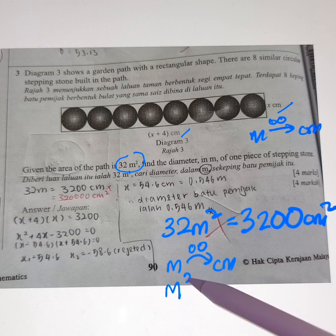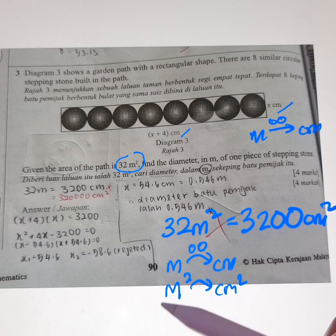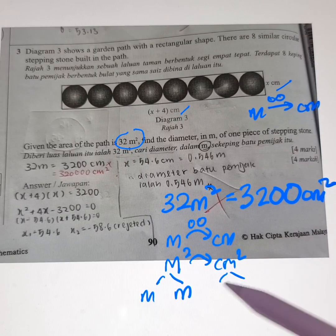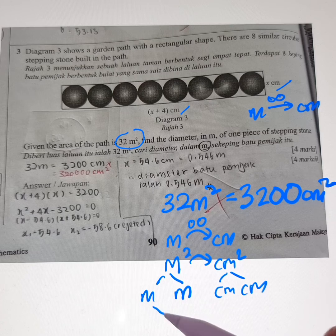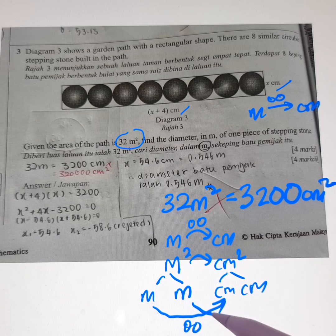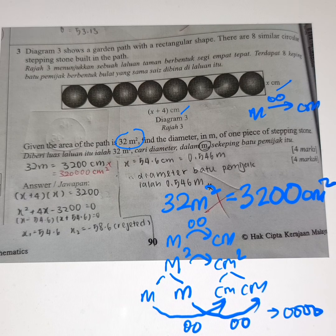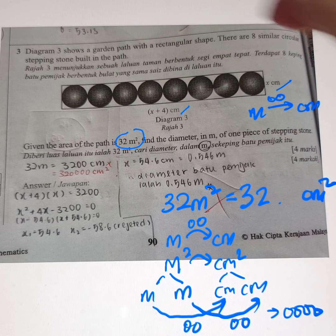Meter square to cm square. This one is meter times meter. Cm times cm. So 100 times 100. So total 10,000. So this one supposed to be what? Supposed to be...